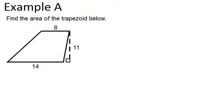In example A, it says to find the area of the trapezoid below. So remember our formula for finding the area of a trapezoid is you want to take the two bases and add them up, so those are the two parallel sides, then multiply by the height.